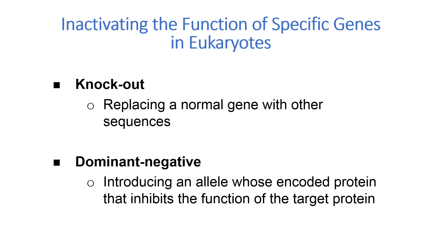Although the general functions of proteins identified by sequence searches may be predicted by analogy with known proteins, the precise in vivo roles of such new proteins may be unclear in the absence of mutant forms of the corresponding genes. In this section, we will look at several ways for disrupting the normal function of a specific gene in the genome of an organism. Analysis of the resulting mutant phenotype often helps reveal the in vivo function of the gene and its encoded protein.